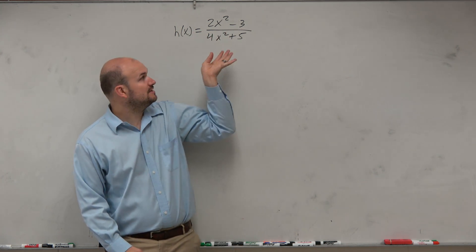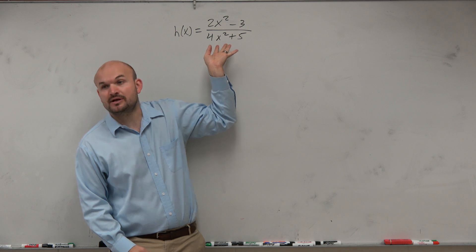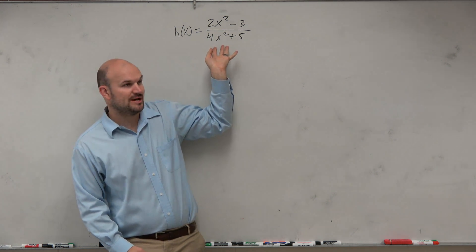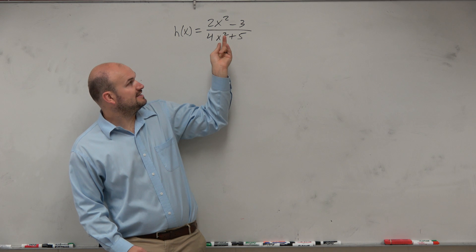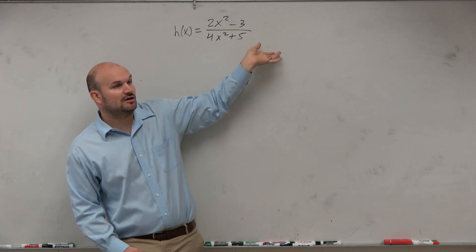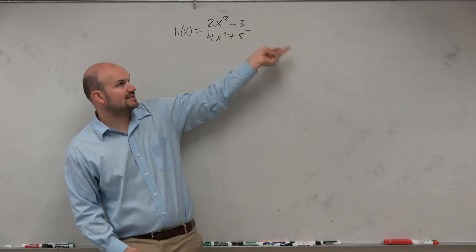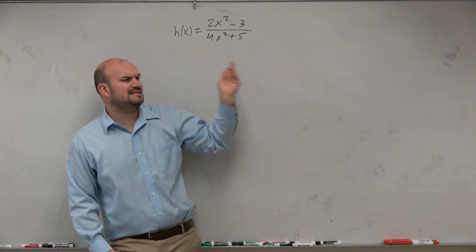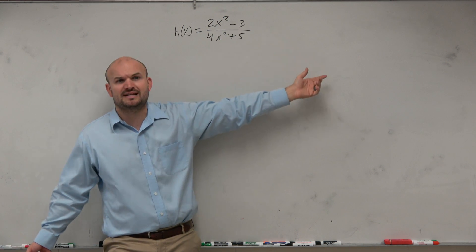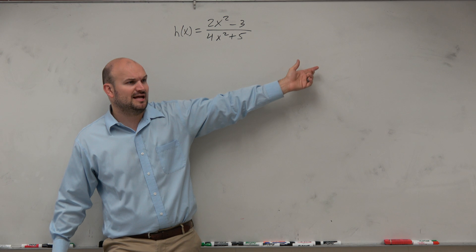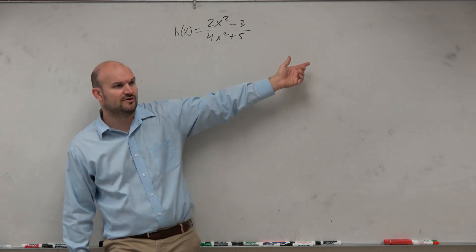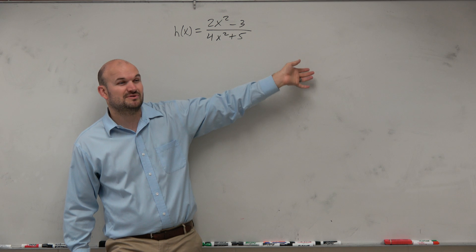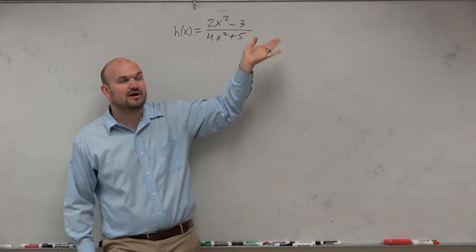Now, first one was vertical asymptotes. For a vertical asymptote, you set the denominator equal to zero. This is from chapter two, you guys remember? Set the denominator equal to zero and solve. Well, what I notice is I'm going to subtract the five, divide by four, and then take the square root. Well, I'm going to be taking the square root of a negative number. So is that vertical asymptote going to be true for real numbers? No, it's going to be for complex numbers. So there is no vertical asymptote for this graph.